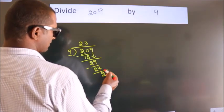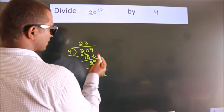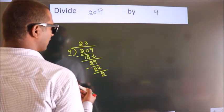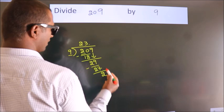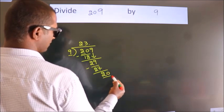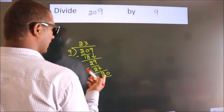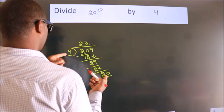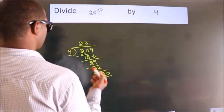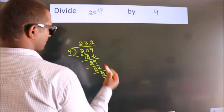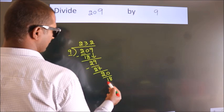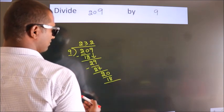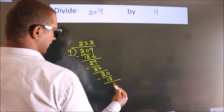After this, no more numbers to bring down. So what we do is we put a dot and take 0. So, 20. A number close to 20 in the 9 table is 9 times 2, which is 18. Now we subtract. We get 2.